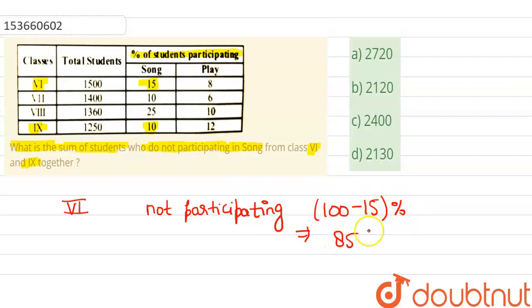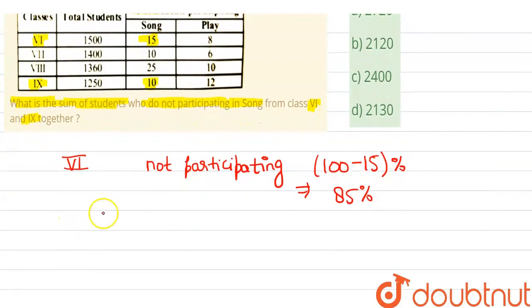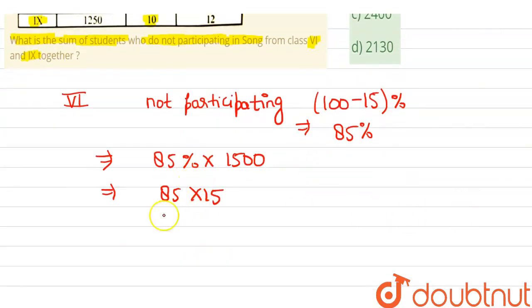So we get 85% not participating. We can calculate 85% of 1500. I can write it directly as 85 times 15, and we will get 1275. This is the number not participating in class 6.